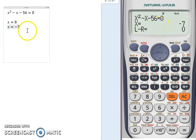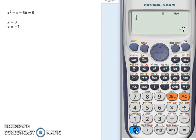Now what if our initial value is positive 100? We press shift solve again and then we press 100 for our initial value, and then we press equals, and x is equal to 8.